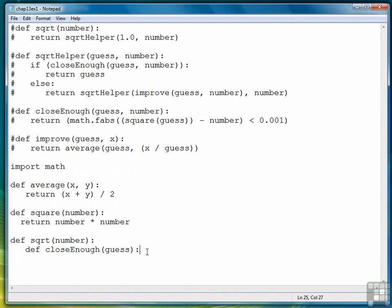We take advantage of lexical scoping to only have to pass one parameter to the function. Then we'll write out the definition for close enough right here.